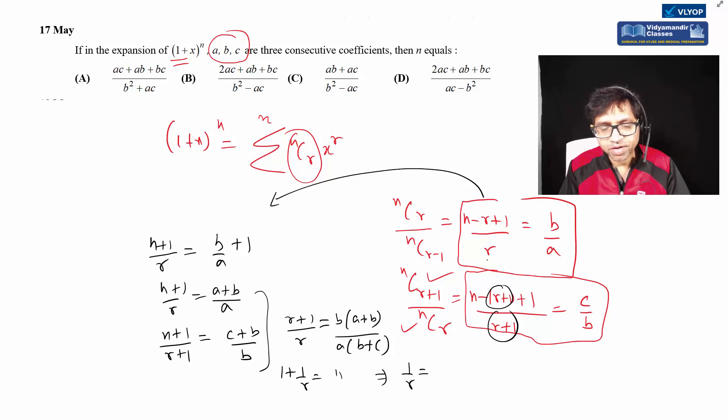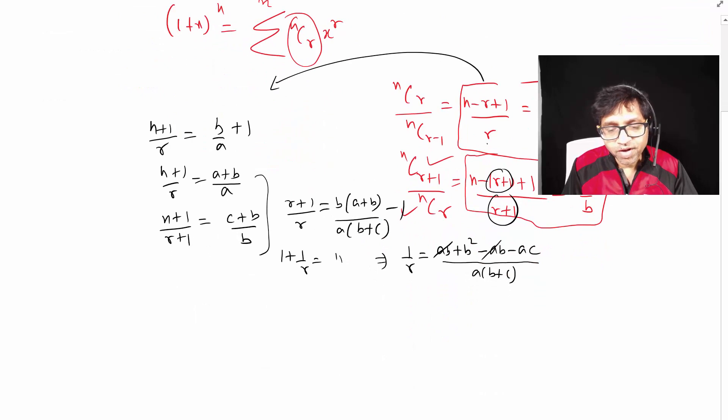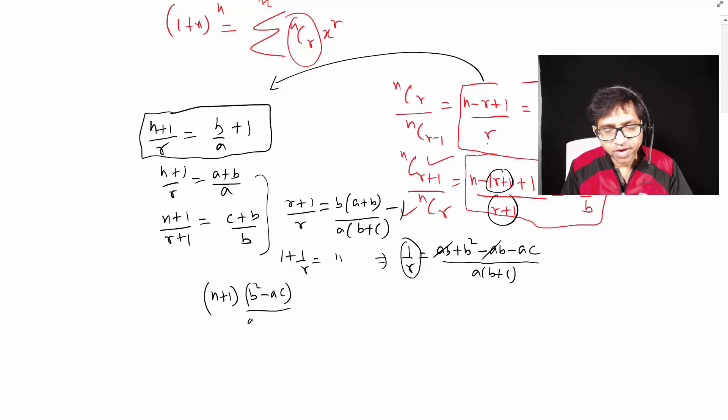Now 1/r can be replaced. We already have 1/r equals (B²-AC)/(A(B+C)). Substituting this into n+1 equals (A+B)/A times 1/r, we get n+1 equals (A+B)(B+C)/(B²-AC). Taking LCM and simplifying: AB+B²+AC+BC divided by (B²-AC).